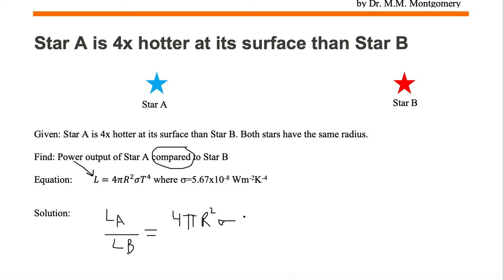Sigma is a constant. And then we just have the temperature of A to the fourth power.